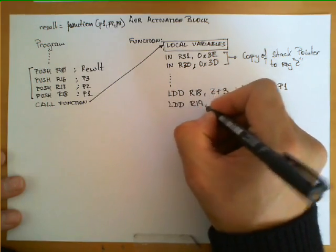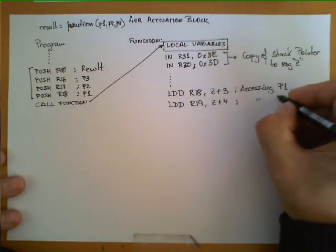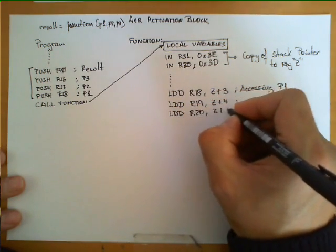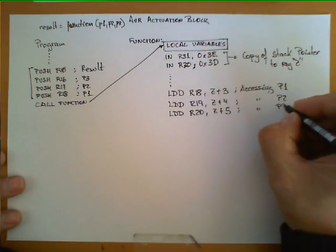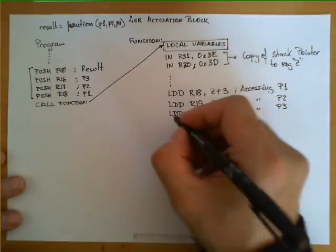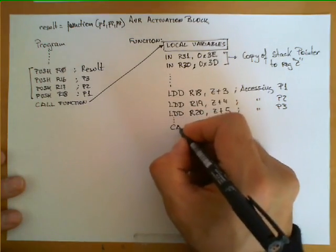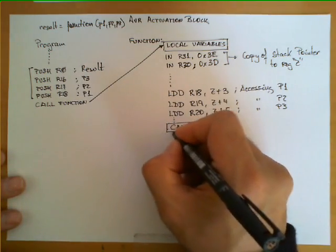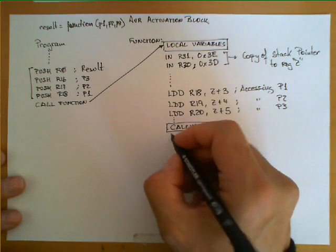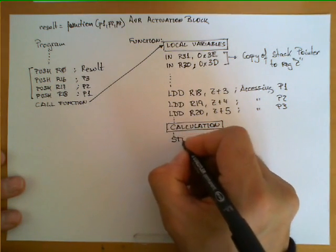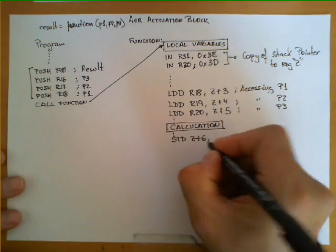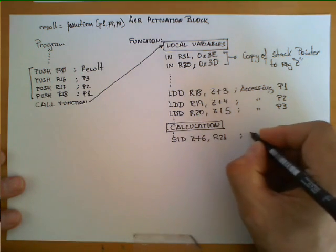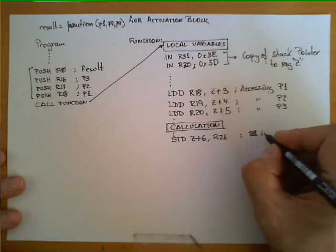Similarly, LDD R19, Z+4 would be accessing P2, and LDD R20, Z+5 would be accessing P3. That is my way to access the parameters. Then I would perform some additional instructions requiring calculation. Eventually, I would store the result using the instruction STD Z+6, with the result assumed to be in register R21.